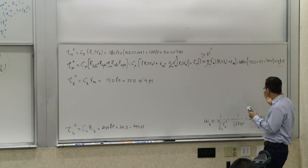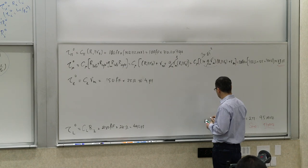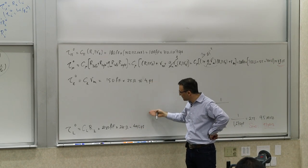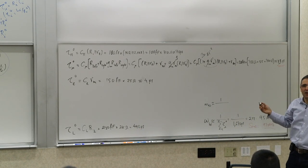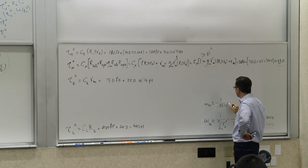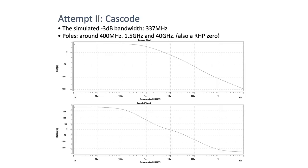The new sum of time constants: 70 + 28 + 4 + 440 ≈ 550 ps. So omega_H2 ≈ 1/550 ps, corresponding to approximately 2π × 294 MHz. We improved our bandwidth by a factor of 3 by identifying and eliminating the Miller effect as the dominant source. Can we do more? Let's look at which time constant is dominant now.